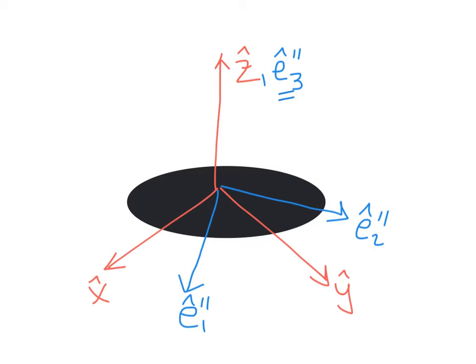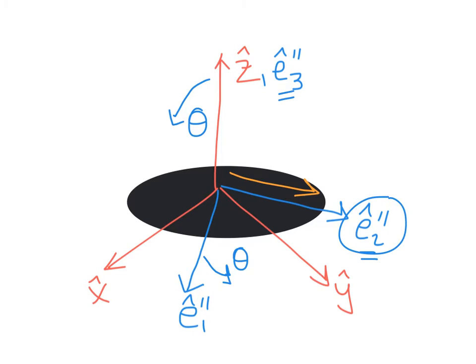The next rotation for Euler angles is to rotate about the E2 double prime axis by an angle theta. That means you're going to rotate about this axis by an angle theta, which will bring down the E3 double prime axis by angle theta, and that will send the E1 double prime axis down by the same angle theta. The rotation vector for this points along E2 double prime, and we call that theta vector. This gives us our new coordinate system, which we'll show on the next slide.